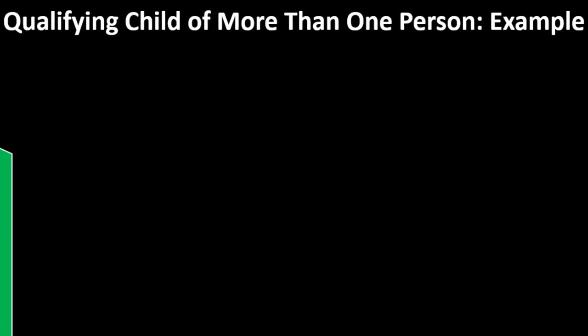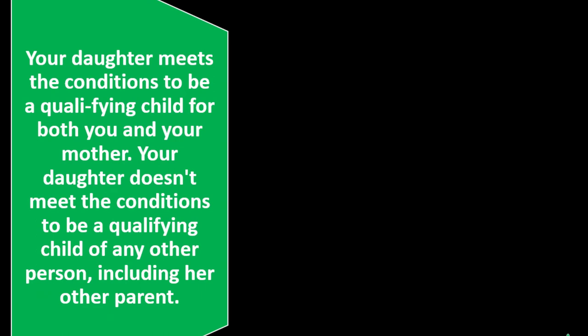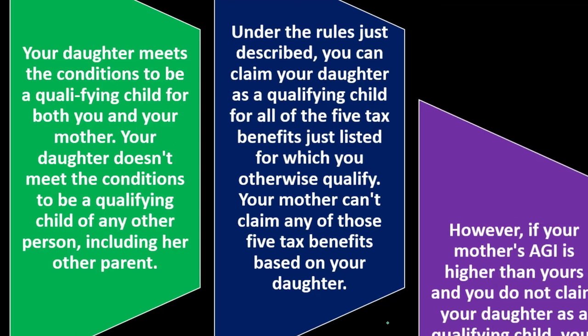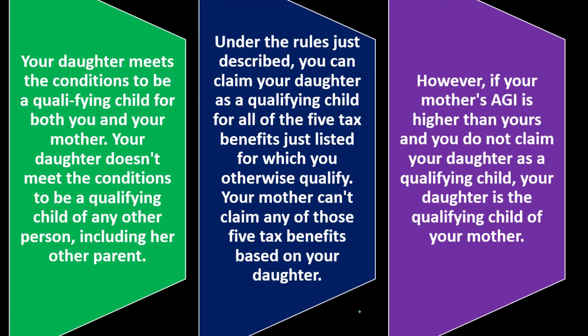Qualifying child of more than one person — example: your daughter meets the conditions to be a qualifying child for both you and your mother. Your daughter doesn't meet the conditions to be a qualifying child of any other person, including her other parent. Under the rules just described, you can claim your daughter as a qualifying child for all five tax benefits for which you otherwise qualify. Your mother can't claim any of these five tax benefits based on your daughter, because the tiebreaker was that you were the parent — even though the daughter could qualify under both.